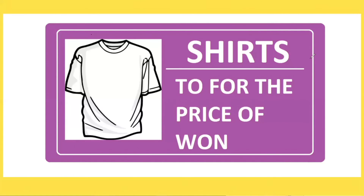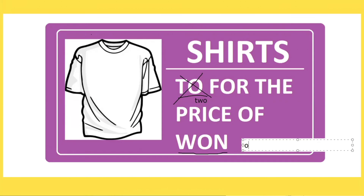Now that you have been able to find the corrections, let's see what this sign should really say. The first error that I made was in the word to. In this case, we want to use the numerical form of the word two, which would be spelled t-w-o. The other error that I made was with the word one. We want to use the spelling that represents the numerical form — o-n-e — to express an amount.